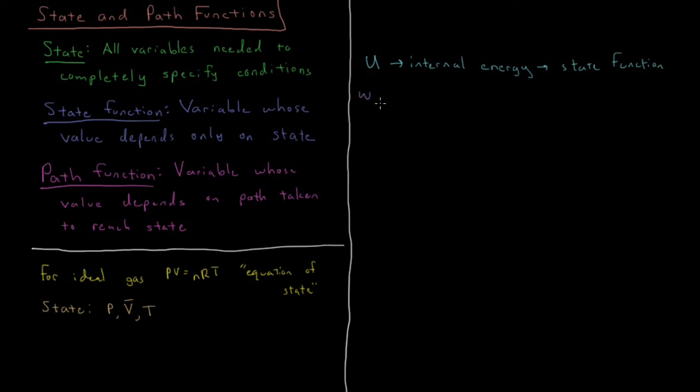Alternatively, work and heat—W and Q—those are both path functions. They depend on how we achieve the current state we're in and in what ways we transferred from one state to another.